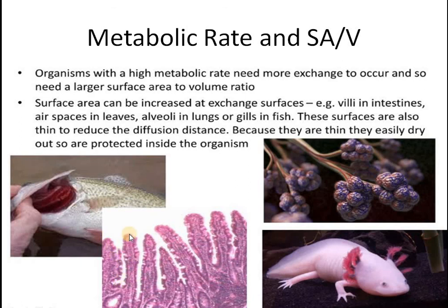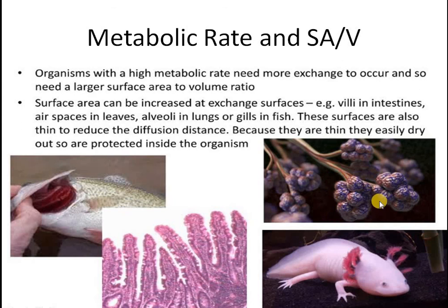Everything that needs to be absorbed in the villi requires a greater surface area to volume ratio. Other examples include air spaces in leaves — which increase the surface area to volume ratio in plant structures. There are also alveoli in the lungs and gills in fish. Alveoli are grape-like structures in the lungs where exchange of carbon dioxide and oxygen takes place. These alveoli have greater surface area to volume ratio, meaning they can take in more oxygen and give off more carbon dioxide. The same function is done by gills in fish. These surfaces are also thin to reduce the diffusion distance, but because they are thin they easily dry out and so are protected inside the organism.